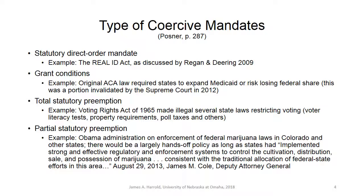First, Posner talks about statutory direct order mandates. An example is the Real ID Act as discussed by Regan and Deering in their 2009 article. The Real ID Act basically compelled states to change the style and the technology used to produce driver's licenses so that they would be more reliable identifications in the light of 9/11. That's really where the Real ID had its genesis.